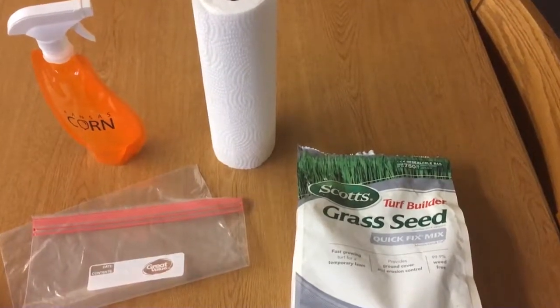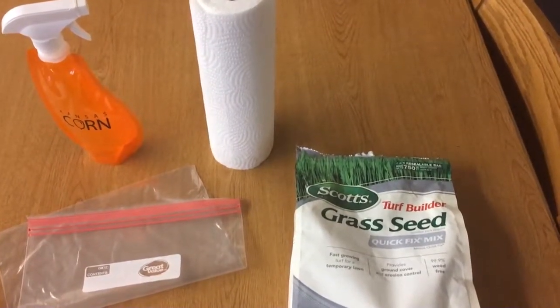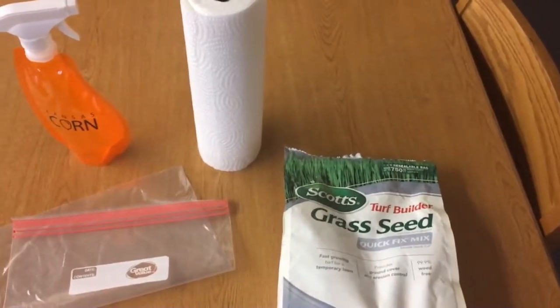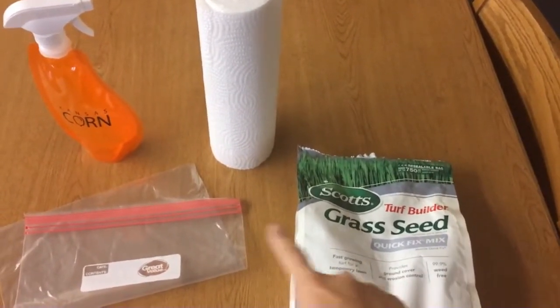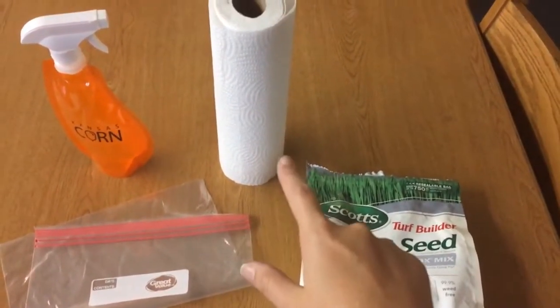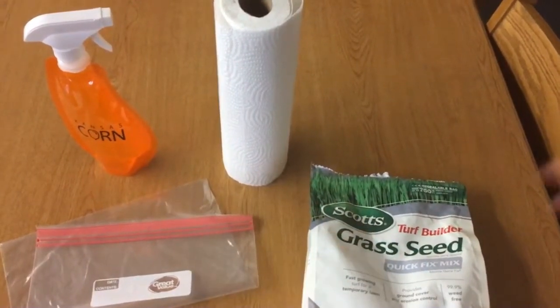When getting ready to sprout your seeds, you'll first need to gather the following supplies: grass seed provided by the district, a ziplock bag, paper towels, and a spray bottle of water.